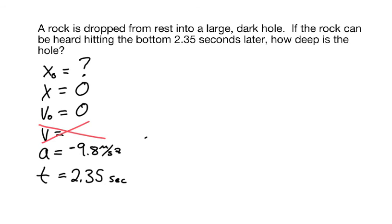That can be a useful way to pick an equation. We're going to use the equation that doesn't have v in it. So that would be this equation: x equals x0 plus v0 t plus 1/2 at squared.